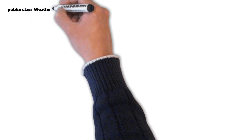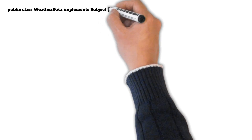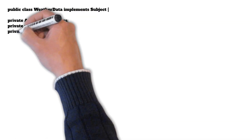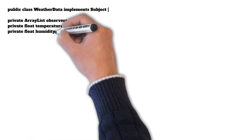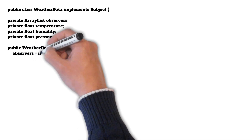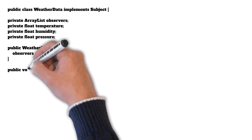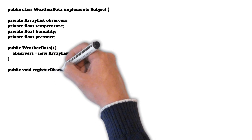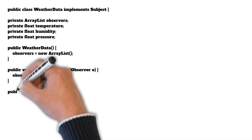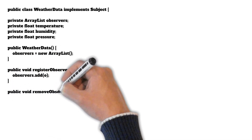Here is the code for the WeatherData object which implements the subject interface. Apart from the temperature, humidity, and pressure properties, it has an additional property which is an ArrayList of observers. In the constructor of the WeatherData object we initialize this ArrayList with an empty ArrayList.